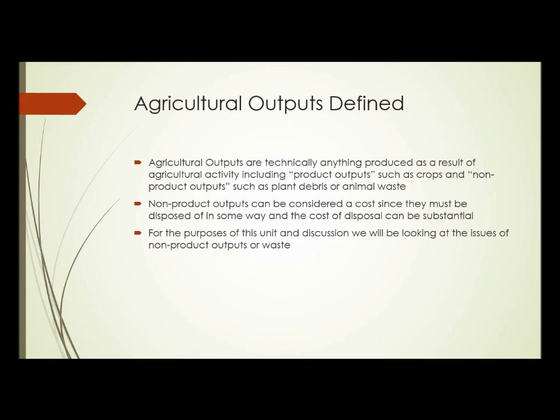This includes both the product outputs — those things that are the desired end product of agriculture, such as crops, animals, eggs, or whatever it is that is desired — but also includes the non-product outputs such as plant debris or animal waste, that sort of thing.